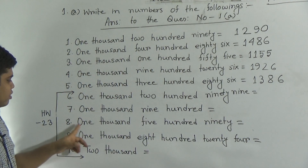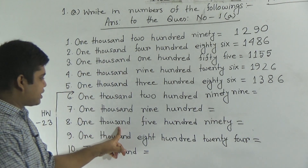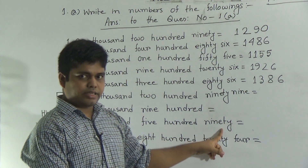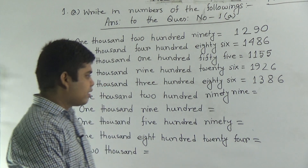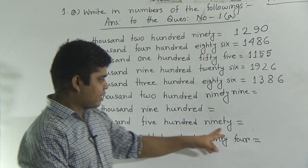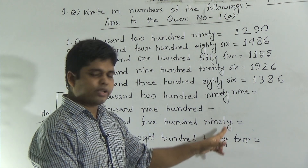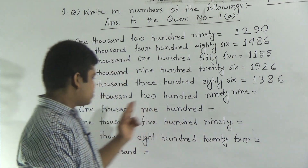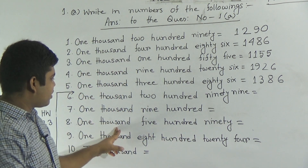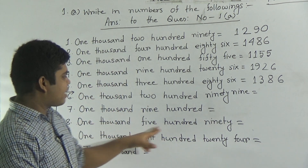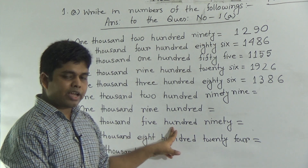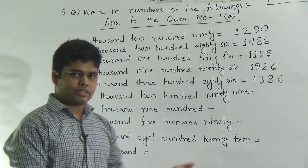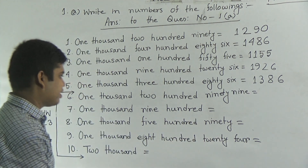Next, question number 8: 1590. Notice — 90. So 1's place is absent. For this reason, that place will be 0. So 1000, 5 for 500, and 90 — that means 90. I hope you have understood.